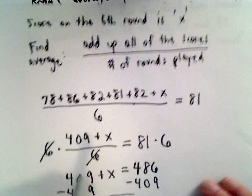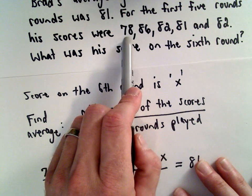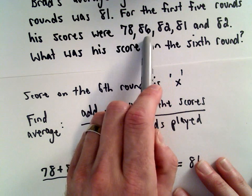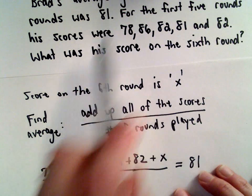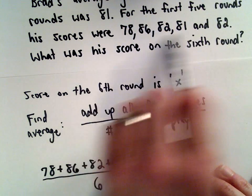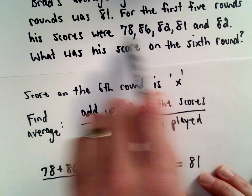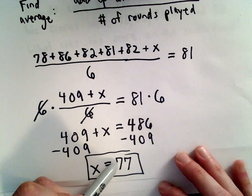Notice that all his scores are pretty close together. His low one was 78, his high one was 86. His average was 81. So I know that the sixth round should be somewhere around those numbers. Intuitively, it wouldn't make sense to me if I got X to be 152. That would seem way too high. Or something like 24, that would be way too low, intuitively.